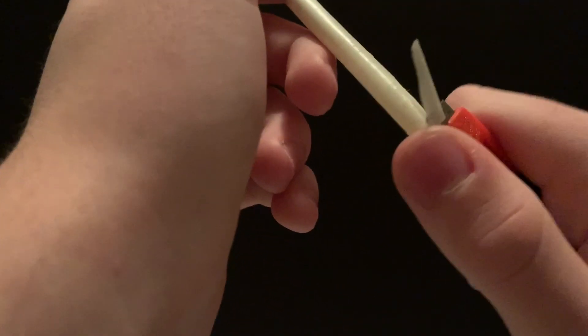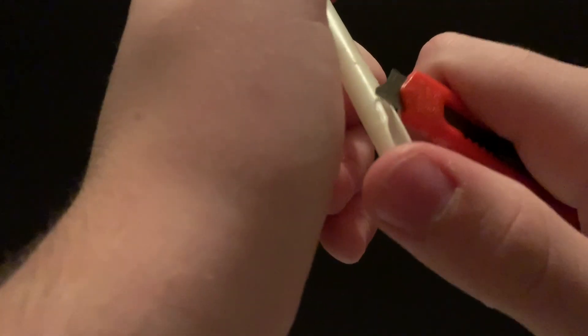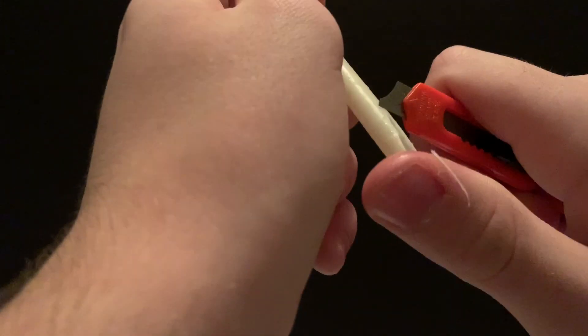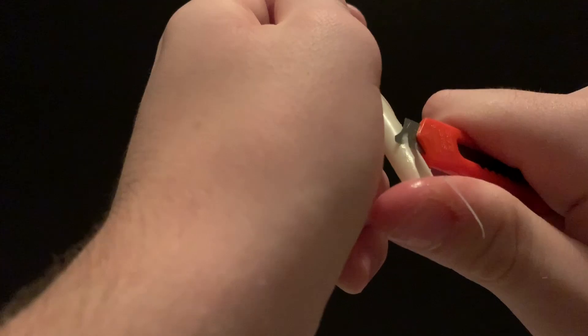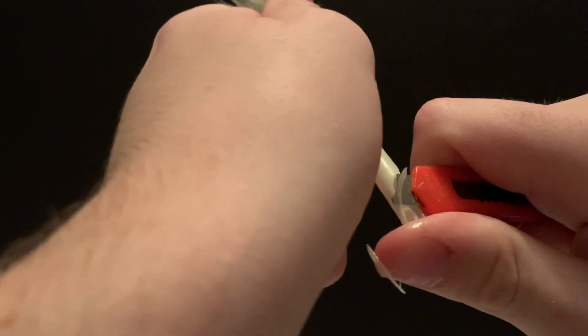We're going to make a cut from about one inch on the quill down to the very bottom in a scooping motion. This will be the main reservoir where the ink is held. And this is what it should look like when you're finished.